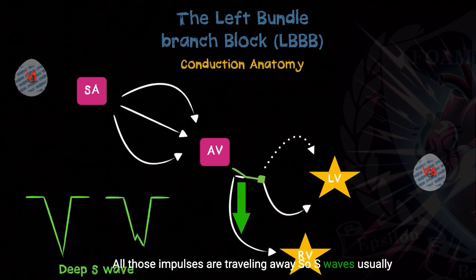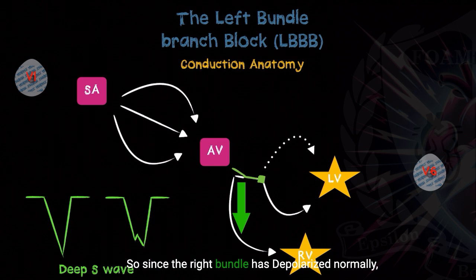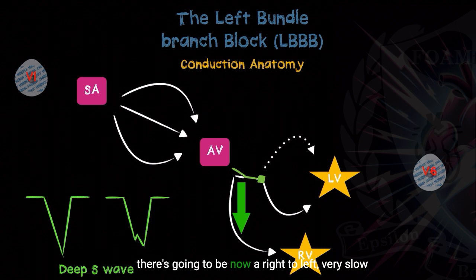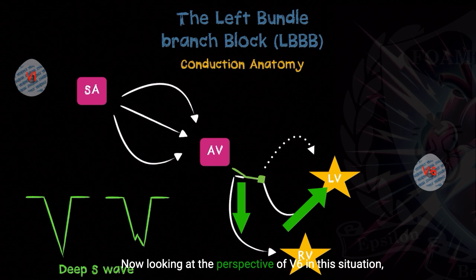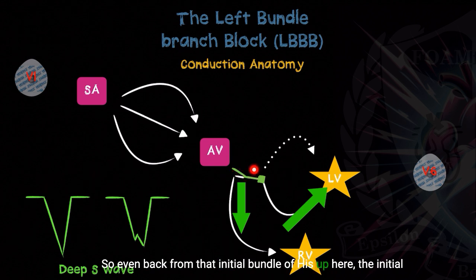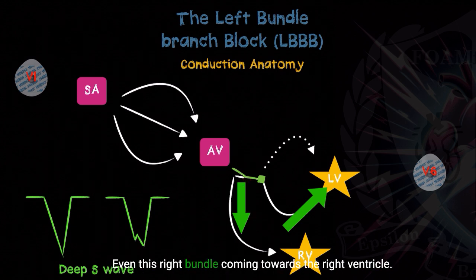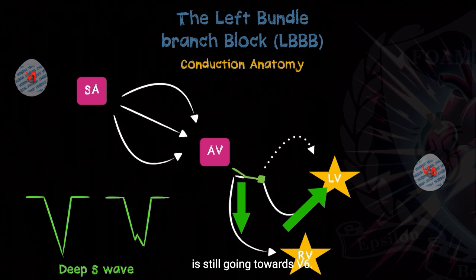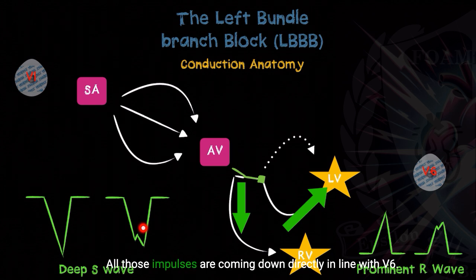All those impulses are traveling away, and S-waves on the 12-lead indicate the impulse is moving away from that lead. So in V1, remember that deep S-wave. Since the right bundle has depolarized normally, there's going to be a right-to-left, very slow myocyte-to-myocyte conduction from the right ventricle to the left ventricle. Looking at V6 in this situation, all the impulses are coming towards it — even from the initial bundle of His, down the left bundle, and the right bundle heading toward the right ventricle. So in V6, you're going to have a prominent R-wave, as all those impulses are traveling directly in line with V6.